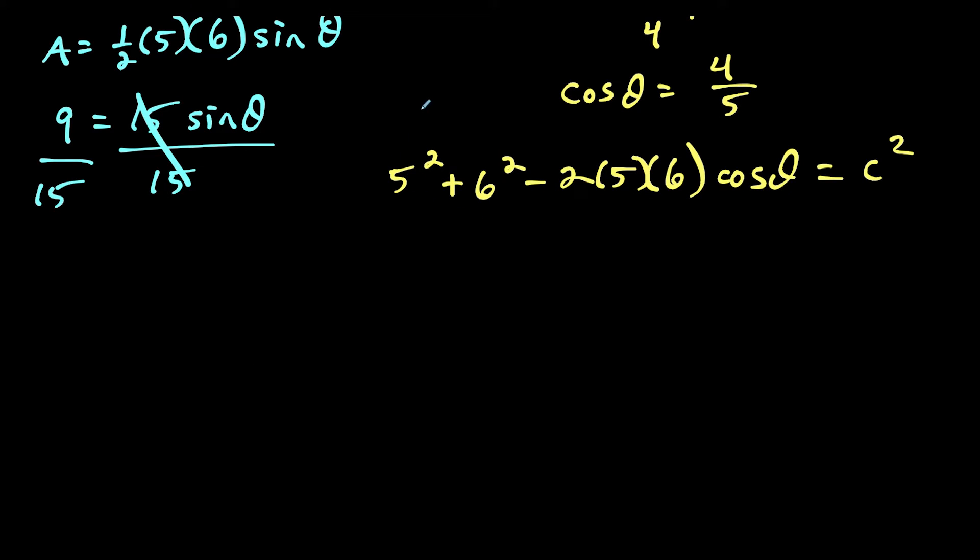And now the rest of this is algebra. So this is going to work out, we would have 25 plus 36, and 25 plus 36 is 61. So we have 61 minus two times five is 10 times six is 60. So we have 61 minus 60 cosine of theta is equal to c squared.